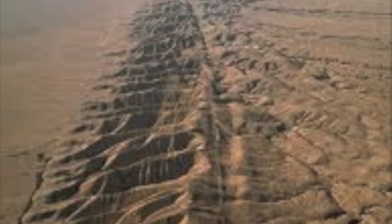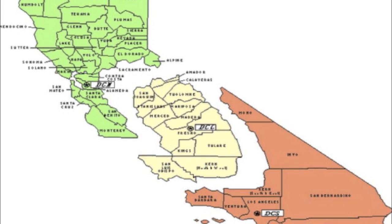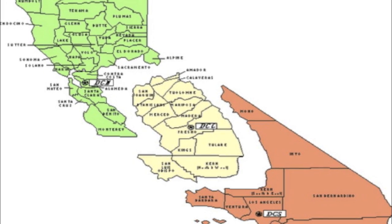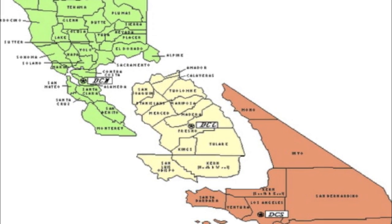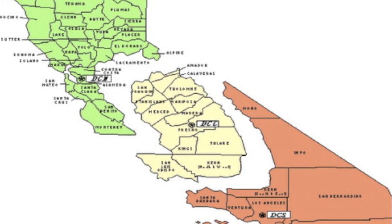The San Andreas Fault is divided into three sections: the southern segment, the central segment, and the northern segment. The southern segment, also known as the Mojave segment, begins near Imperial County and runs along the southern base of the San Gabriel Mountains.